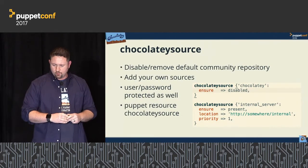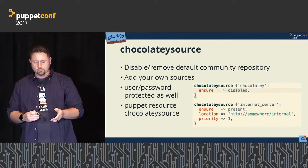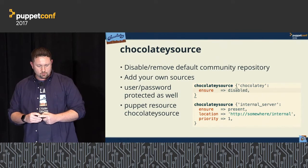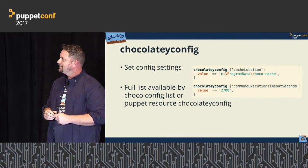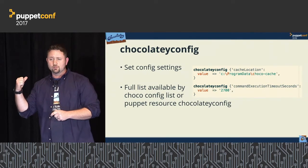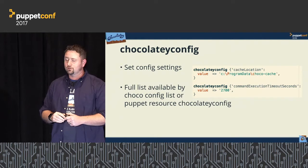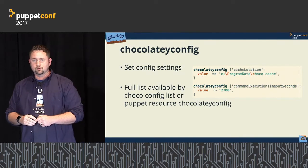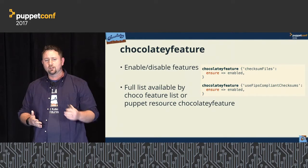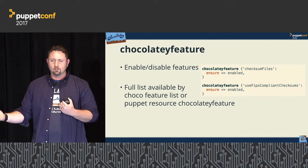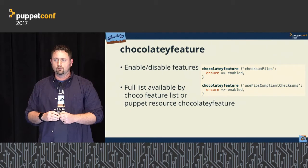Config: there's a full list available in the documentation — see all configuration and features you can set. You can also run Choco config list or Puppet resources to do that as well. Same with features — there's a lot we recommend for organizations, all documented. On the docs pages, we show how we recommend you set up some of the Puppet stuff.